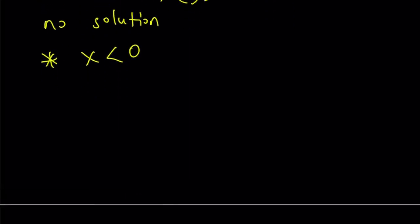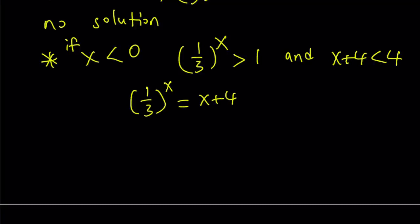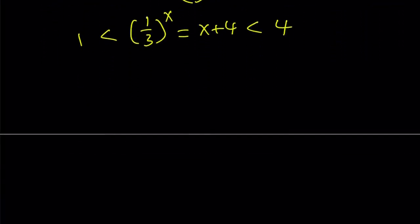For negative x values, if x is less than 0, we have 1 third to the power x. Now, notice that if you raise 1 third to a negative power, like negative 1, negative 2, negative 3, you're always going to get a number that is greater than 1. And, x plus 4 is always going to be less than 4. So, the left-hand side is greater than 1 and the right-hand side is less than 4. Therefore, we have to check the intersection which exists. So, our y value, in this case, has to be between 1 and 4. So, we're basically going to be looking for a solution in this interval.